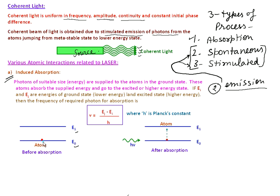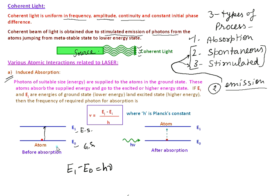The atom which is in the ground state, after absorbing a photon, goes into the excited state. Here, after absorbing that photon of light, this atom goes into the excited state, defined here as E1. The ground state is defined by E0. In general, the difference between these two energy states, E1 minus E0, is equal to h-nu. This is possible only if the energy of the photon is comparable to the difference of these two energy levels.